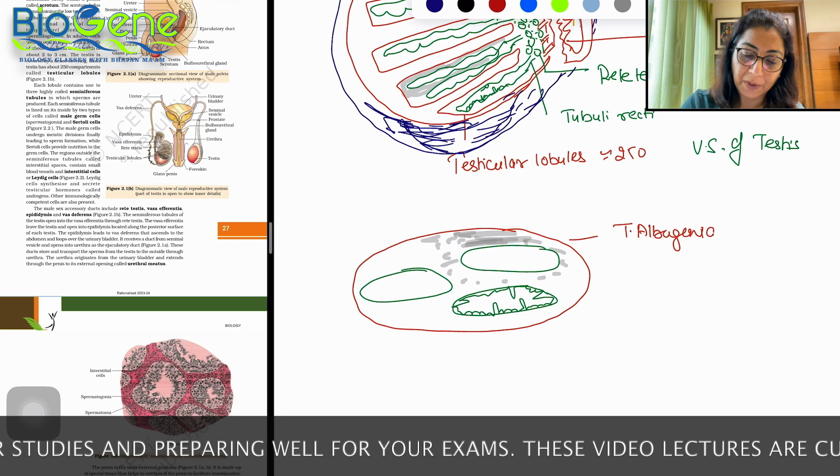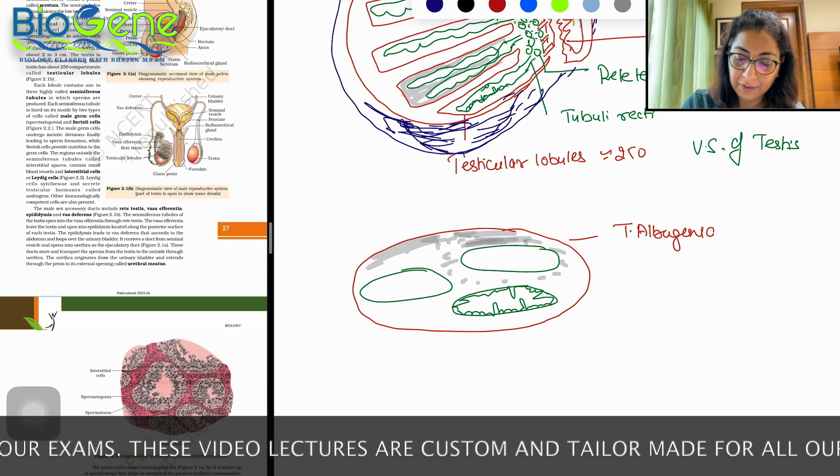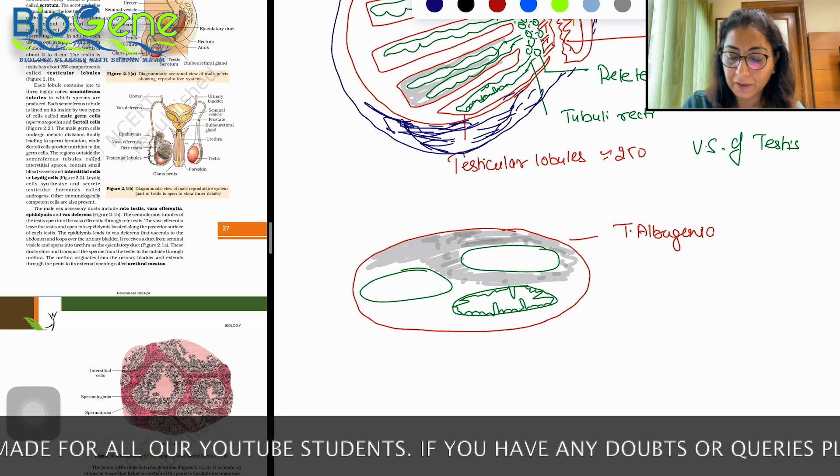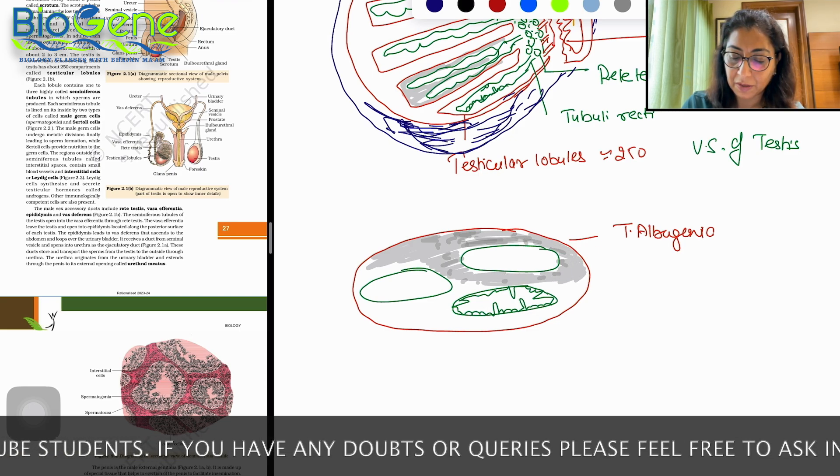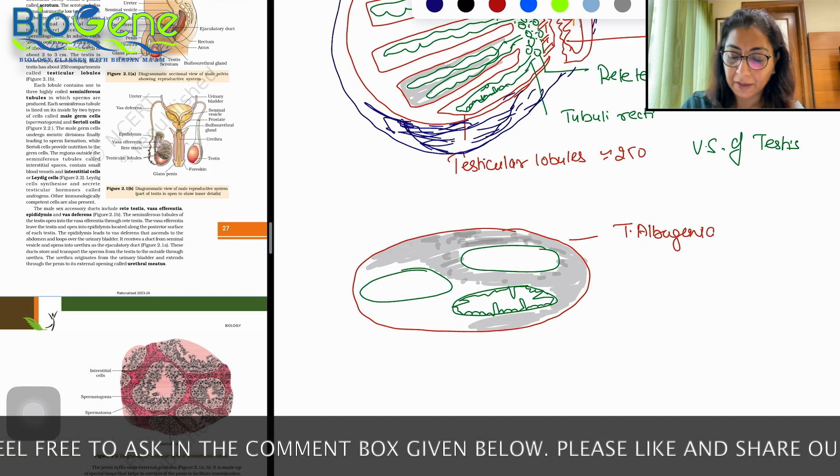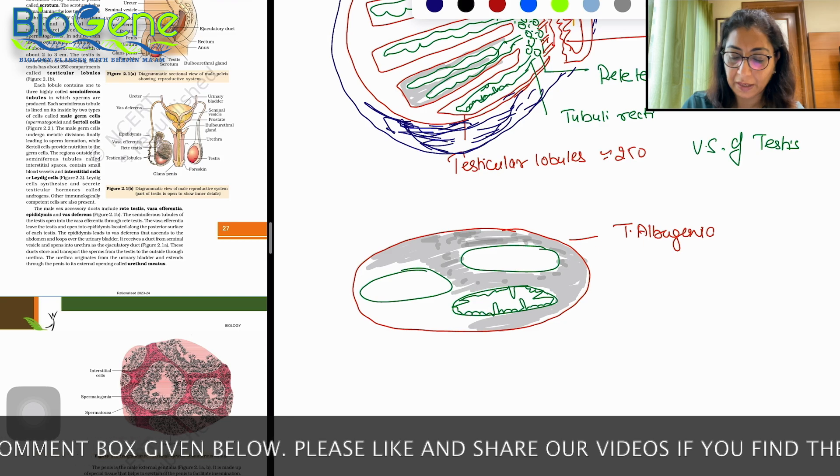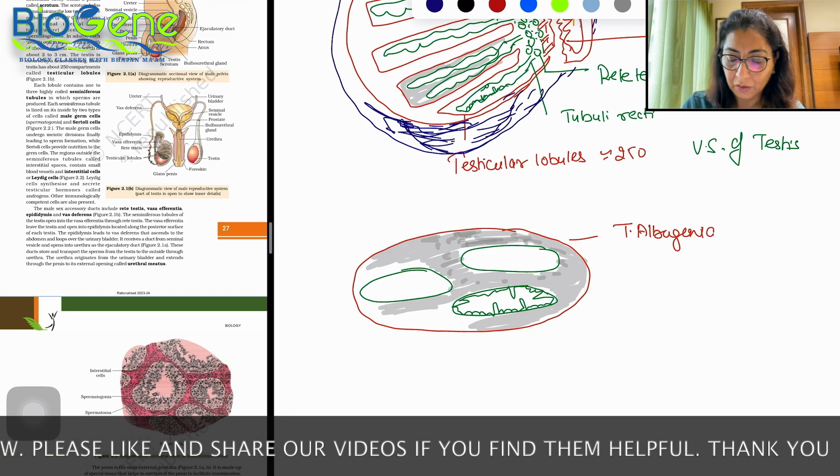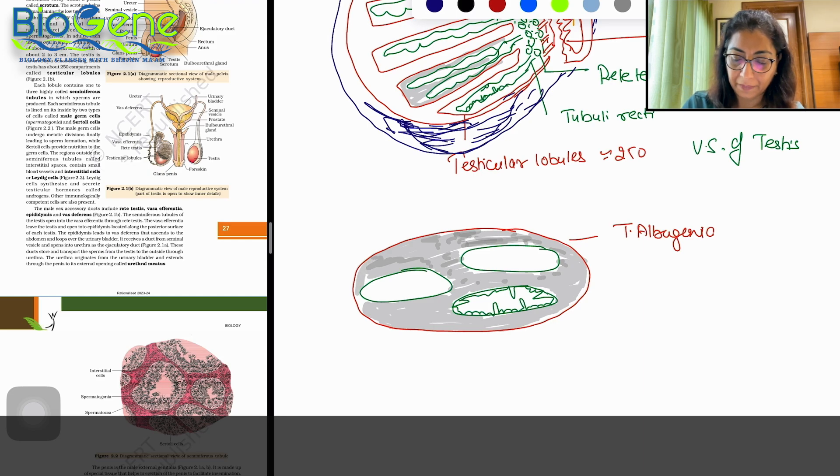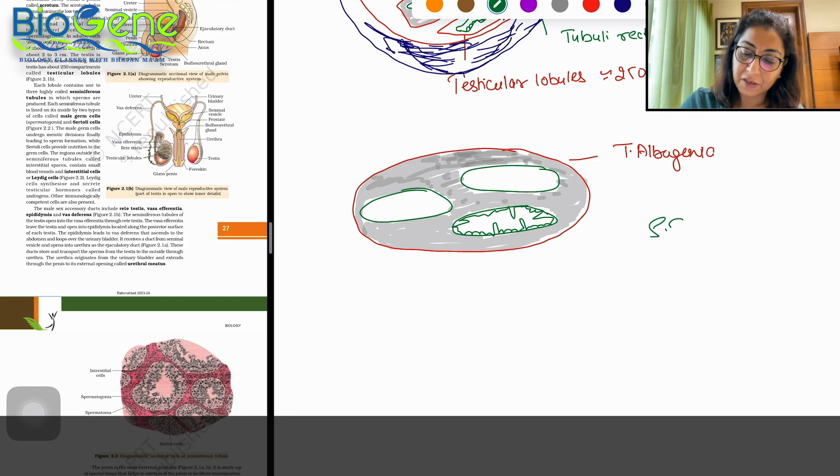Around you can see this part, this gray part you can see. This part is the stroma, external to seminiferous tubules. This is called the stroma and interstitial space.